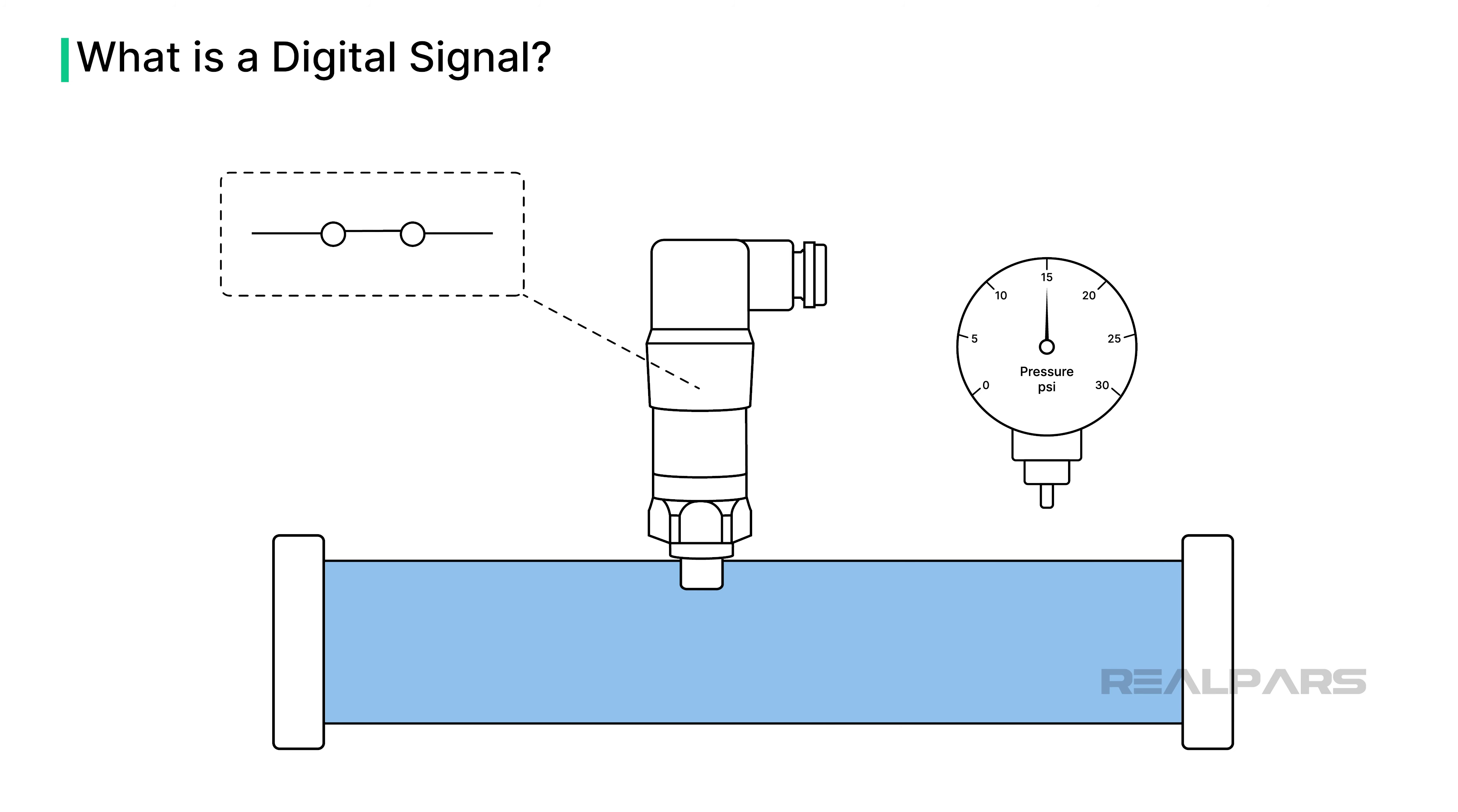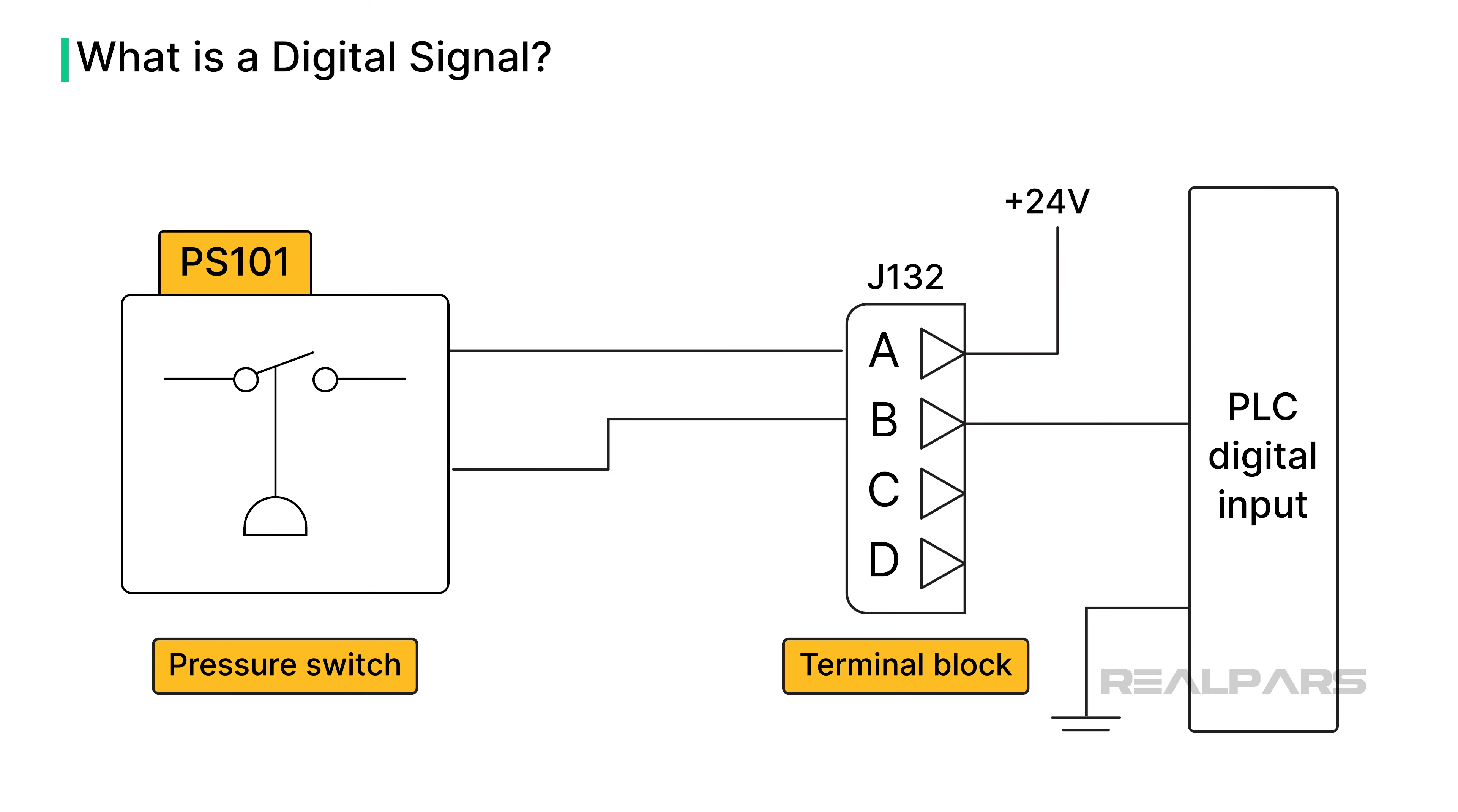Let's look at a pressure switch, a digital field device that operates at a specific pressure of 15 psi. This means the switch is open at pressures below 15 psi and closed at pressures above 15 psi. We can connect this switch to a digital PLC input with a bit of simple wiring.